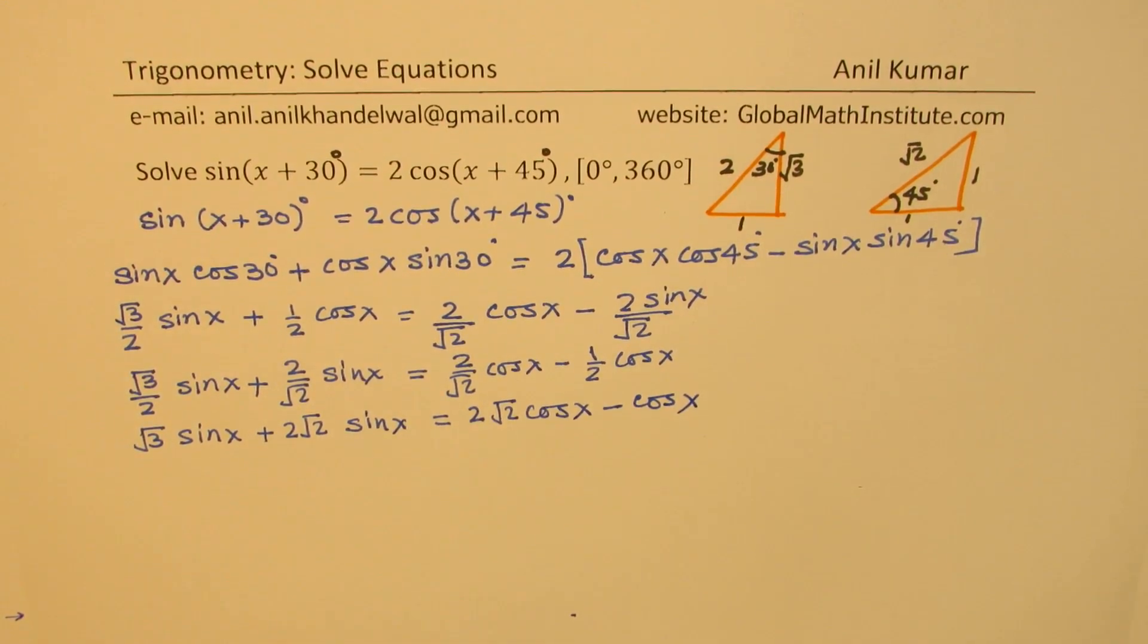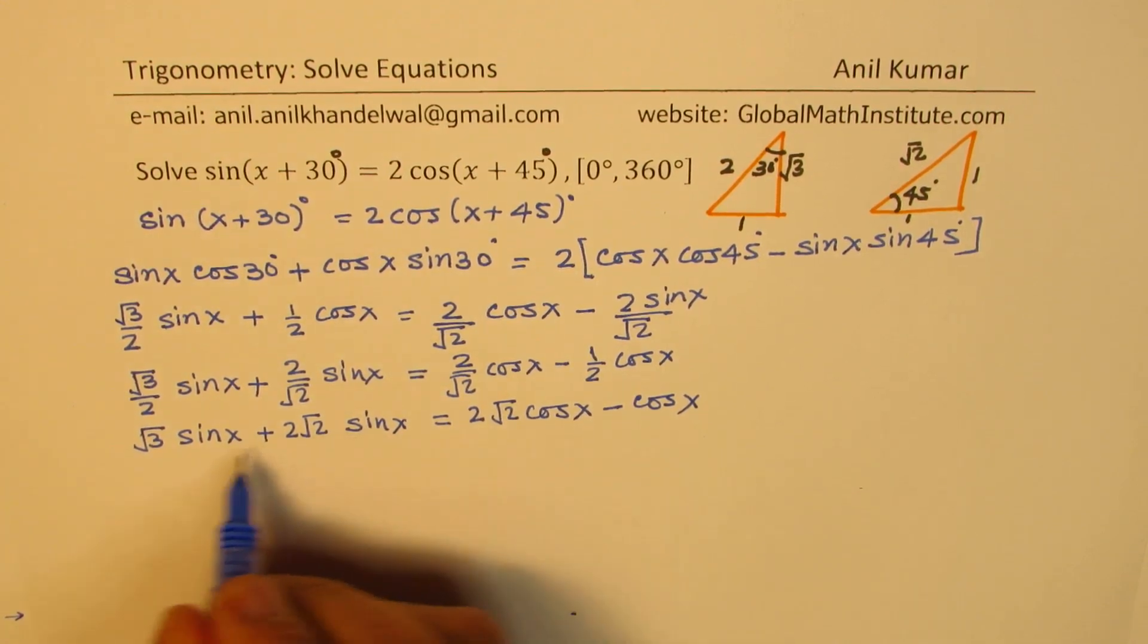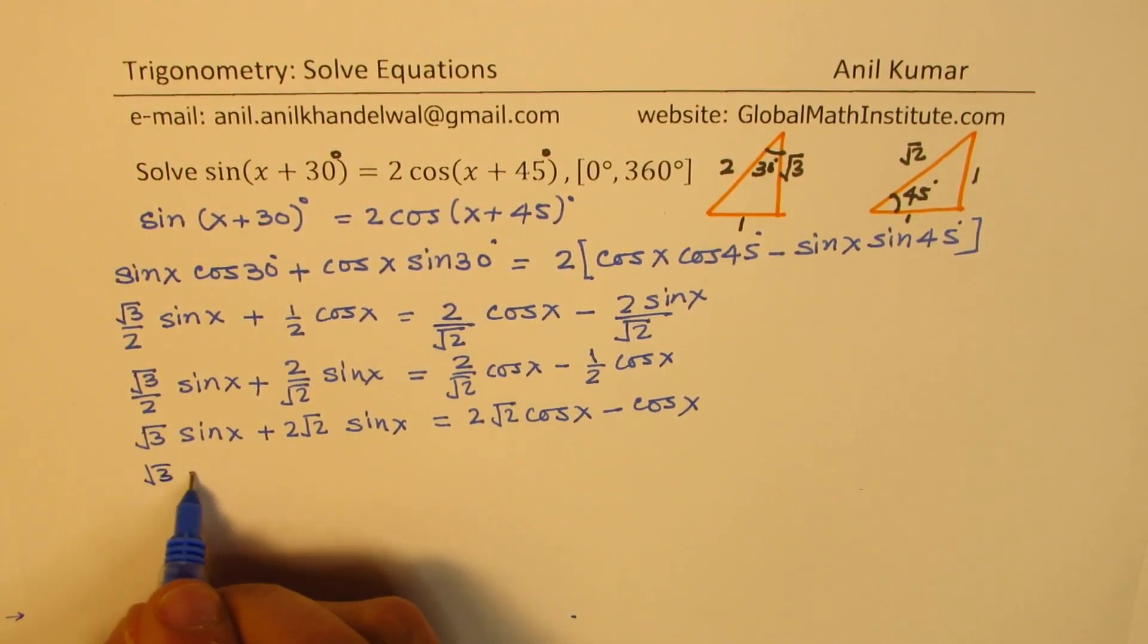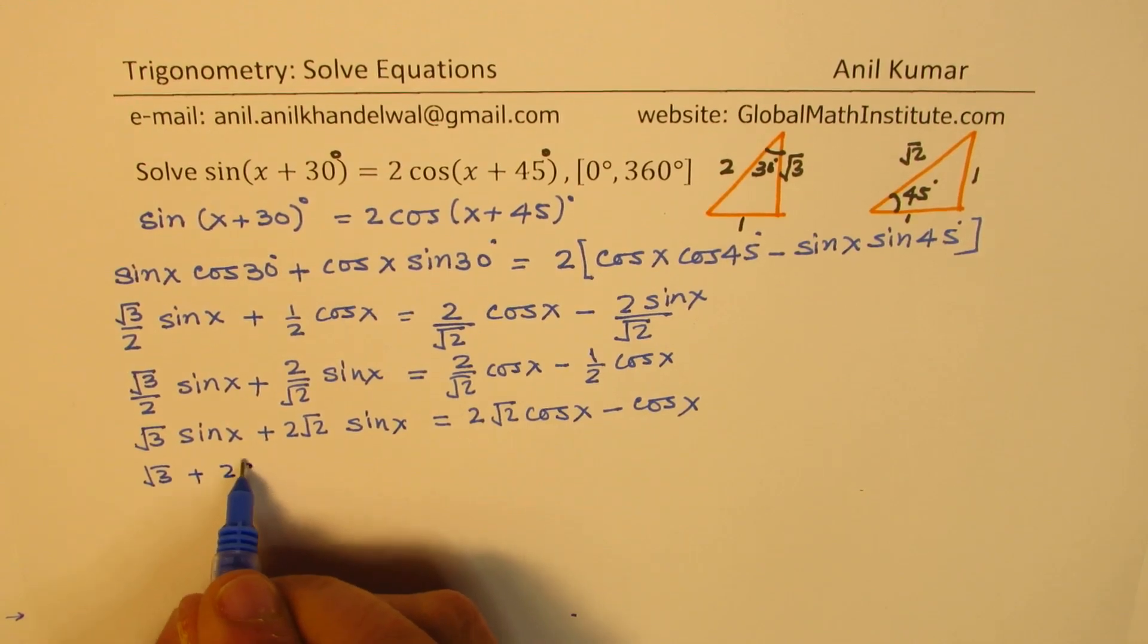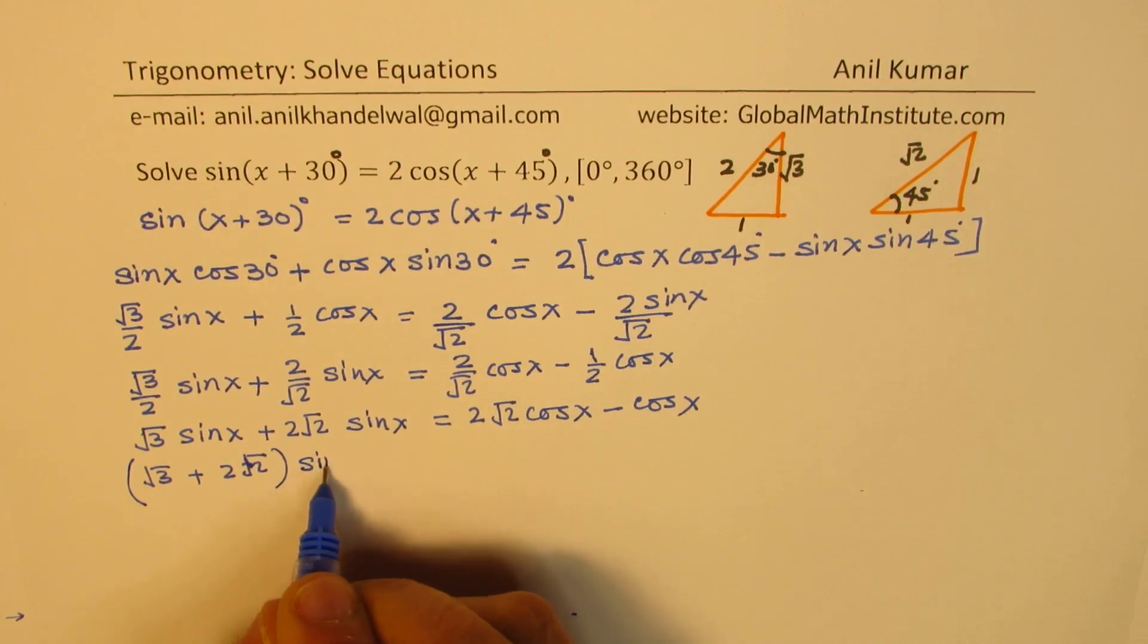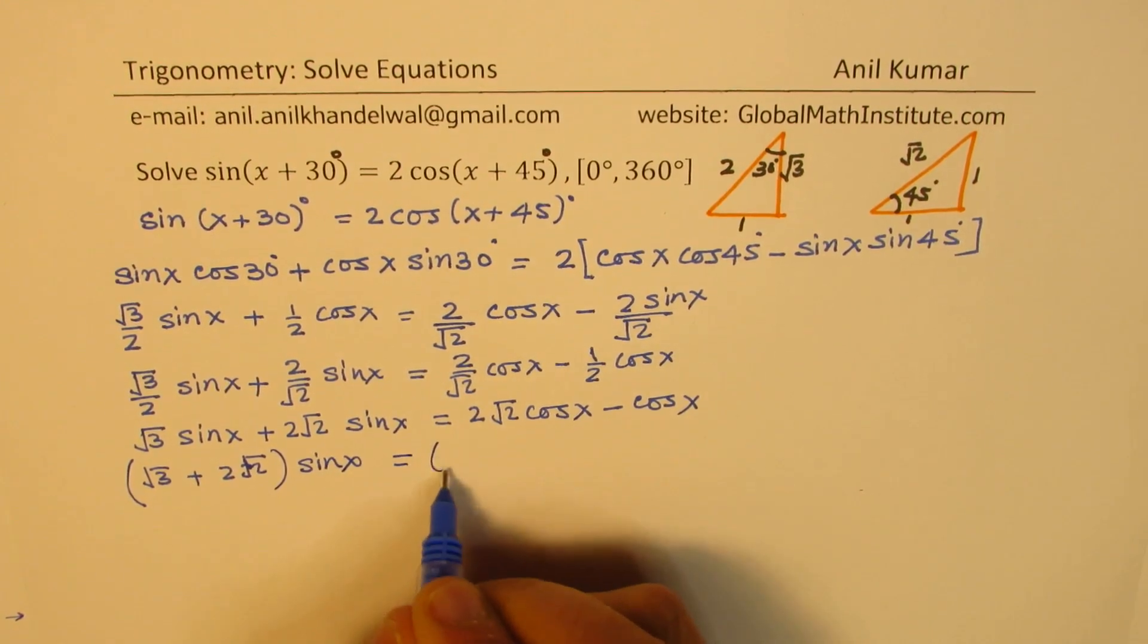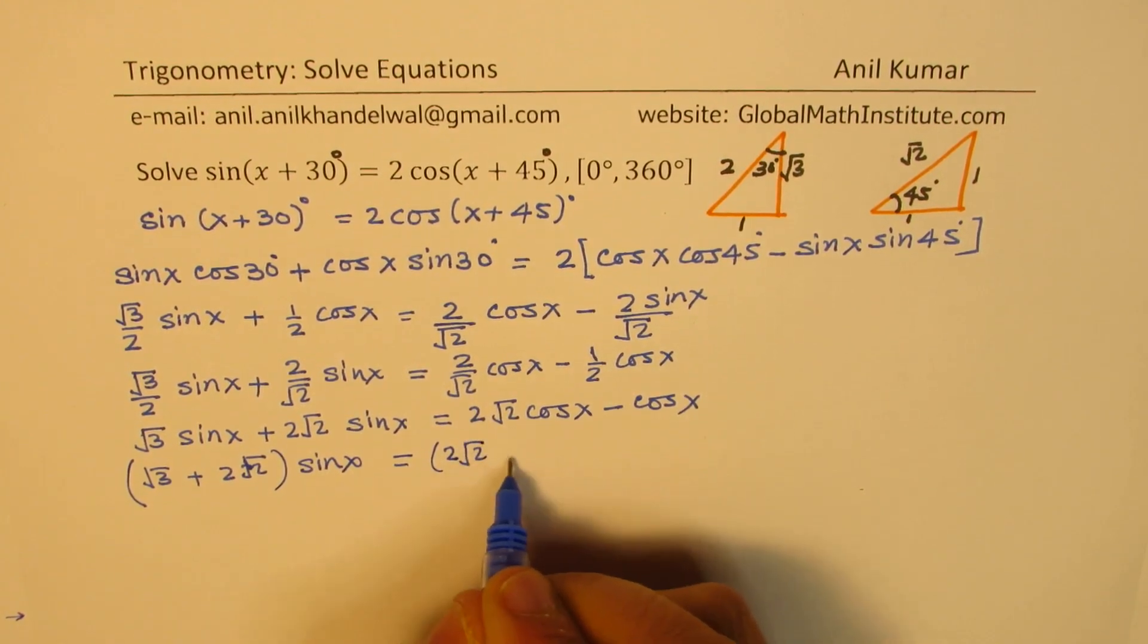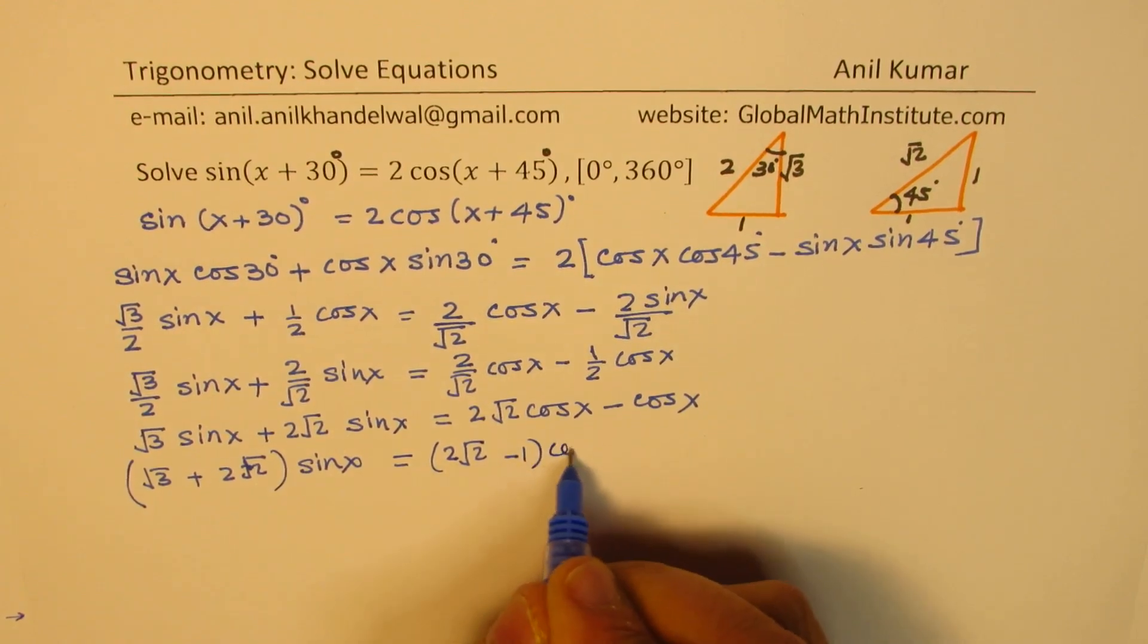So we get now (√3 + 2√2)sin x equals to (2√2 - 1)cos x.